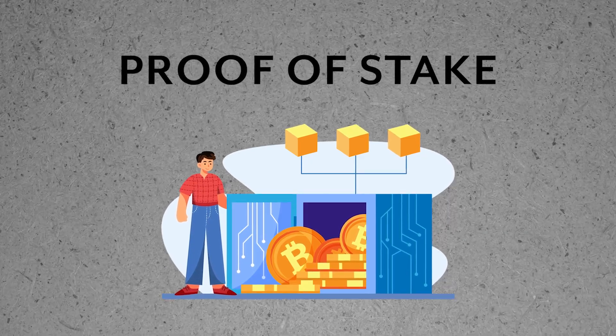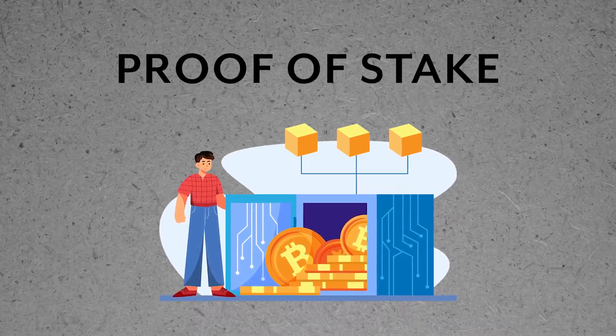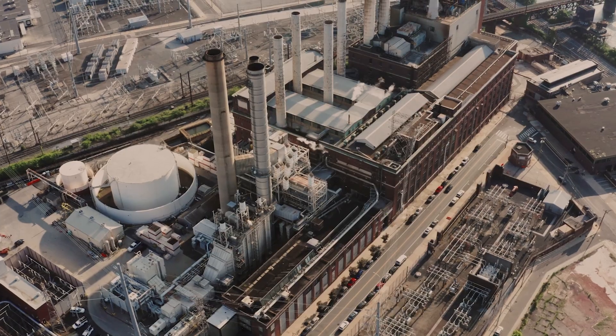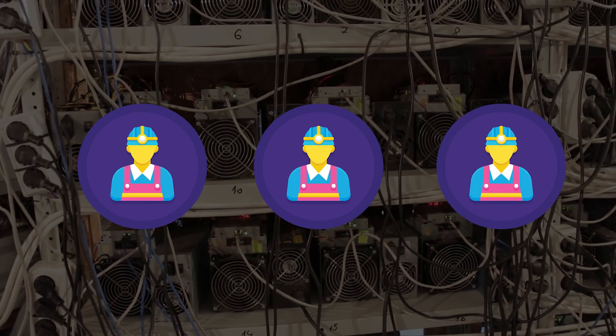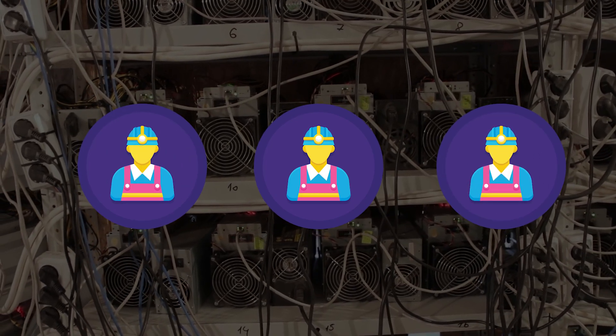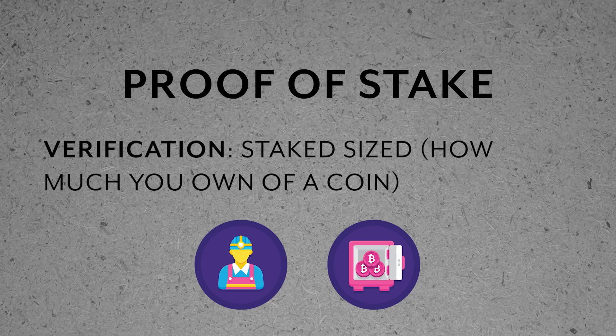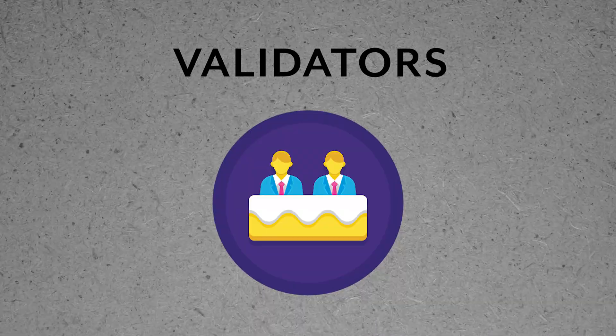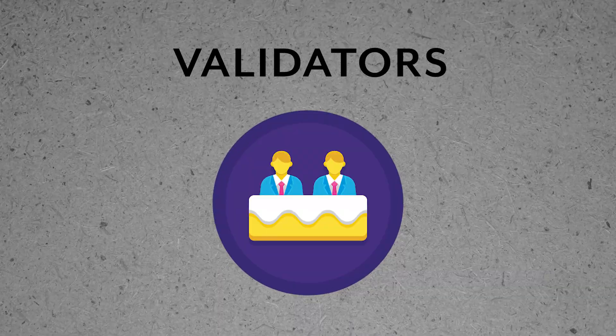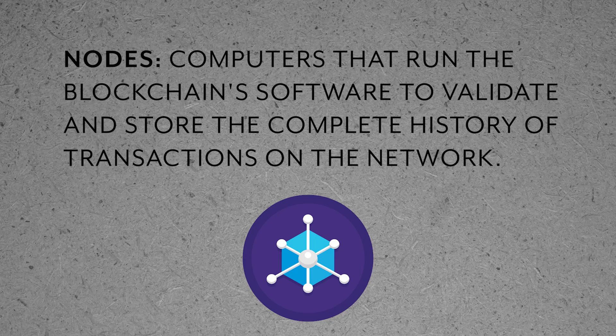Now this is where proof of stake comes in. Proof of stake is a modification to proof of work, first introduced in 2012 as a means to solve proof of work's high energy consumption and problems like the 51% attack. Rather than relying on miners racing against each other, the idea behind a proof of stake network is that participation is determined by ownership of the coin supply, or stake size. Energy-intensive hardware isn't necessary, hence eliminating some of the high-energy issues that proof of work faces.